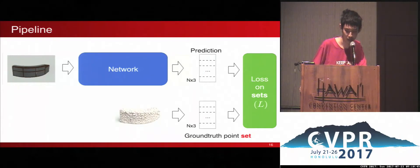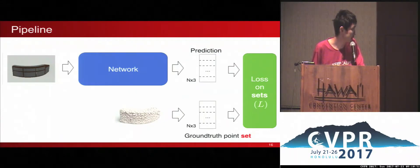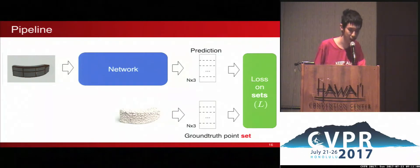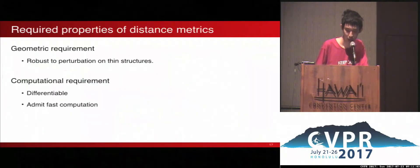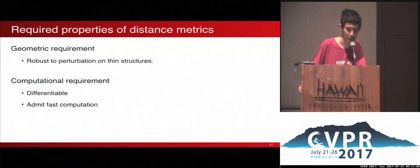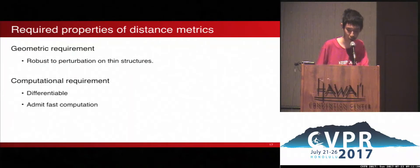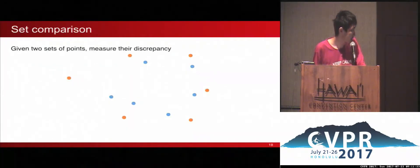This is the pipeline of the whole system, and there are two key issues. First, how should we design the loss function to compare the ground truth with the network prediction? And second, how can we build the network to output point sets? As for the choice of loss function or distance metric, it must be robust to perturbations on thin structures so that we can preserve them. And also, it must be differentiable and computable so that we can plug it into a neural network training framework.